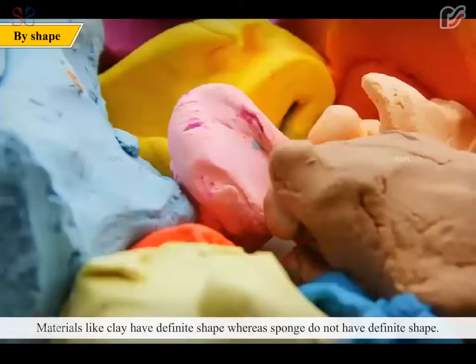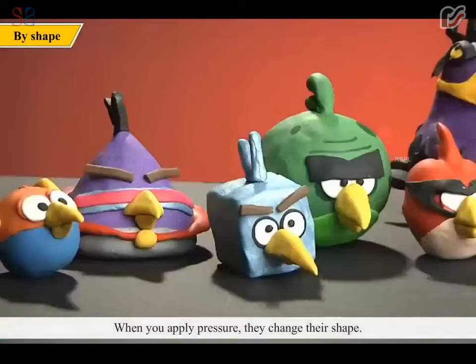Materials like clay have definite shape whereas sponge do not have definite shape. When you apply pressure, they change their shape.